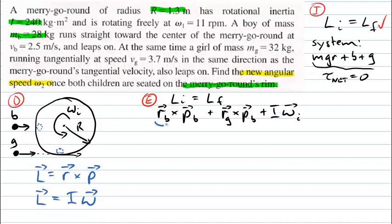The angular momentum of the boy as he runs towards the center and lands on the edge can be calculated straightforwardly. The r vector for the boy points outward as he lands on the rim, and his p vector points towards the center. The angle between those two vectors is 180 degrees, so the cross product involves sin(180°), which equals zero. Therefore the boy, running towards the center of the merry-go-round, contributes zero angular momentum.